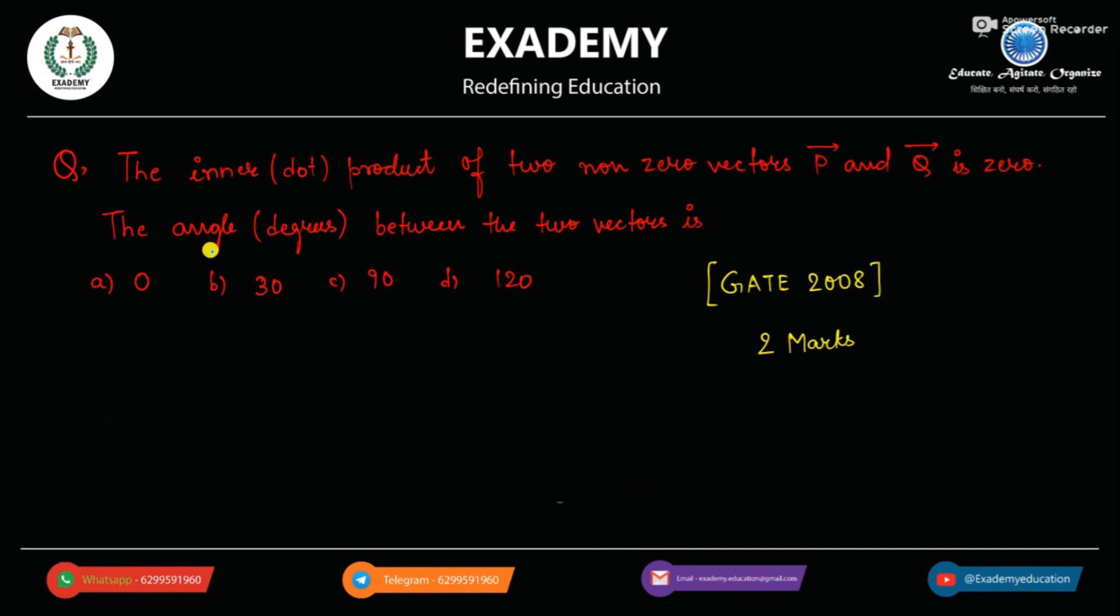The inner or dot product of two non-zero vectors, p-vector and q-vector, is zero. The angle in degrees between the two vectors is this.